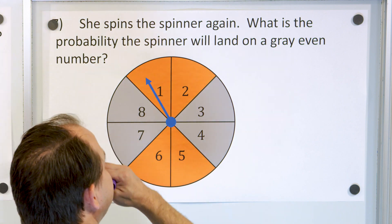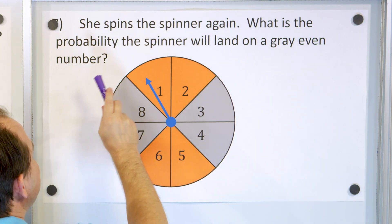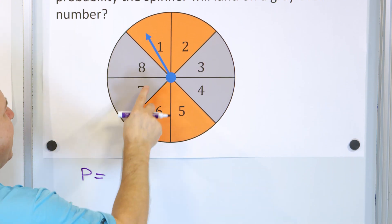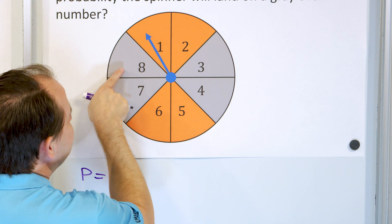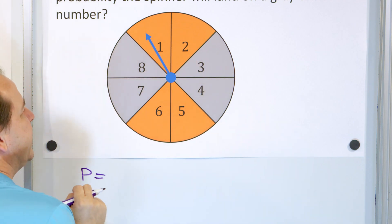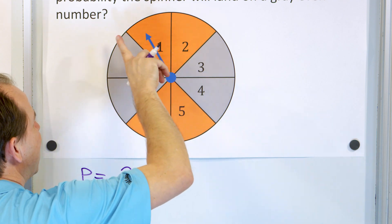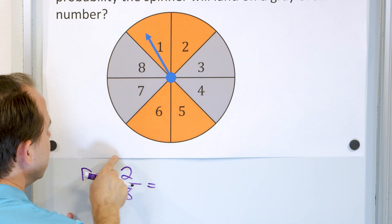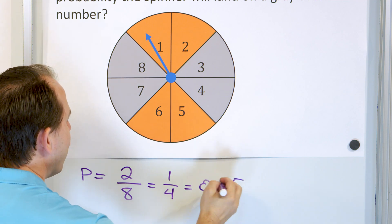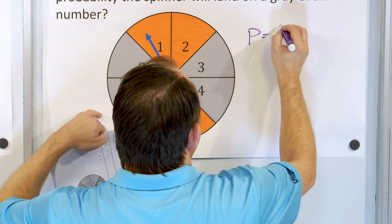Next: what is the probability the spinner will land on a gray even number — not just gray, but gray and even? There are two gray even number positions; the gray odd numbers are separate. So gray even is two positions out of eight total. Dividing by two gives one fourth, which is 0.25 or 25%.